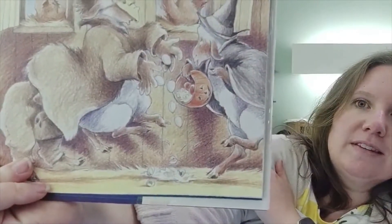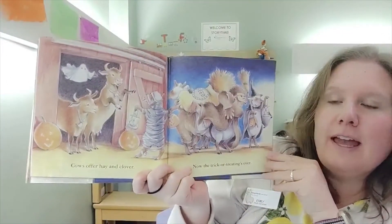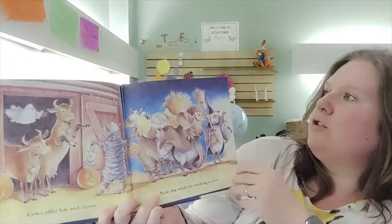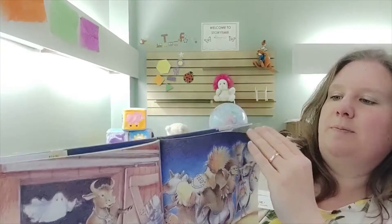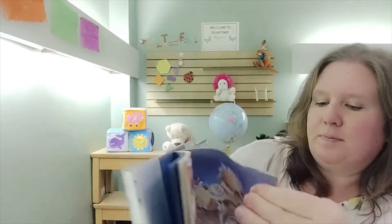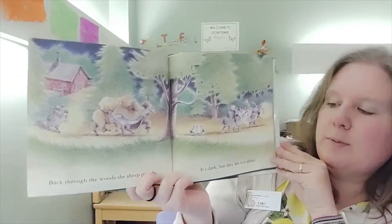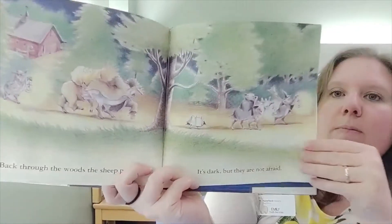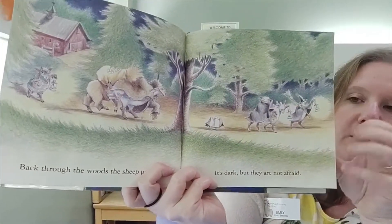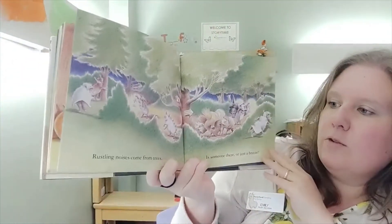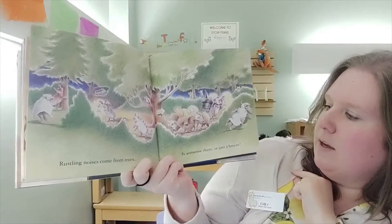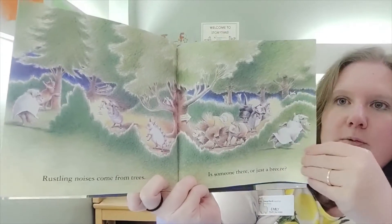Sheep stop by the chicken coop. Chickens give them fresh eggs. Oops! They dropped some of the eggs. Cows offer hay and clover. Now the trick-or-treating's over. Back through the woods the sheep parade. It's dark but they are not afraid.